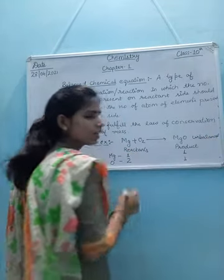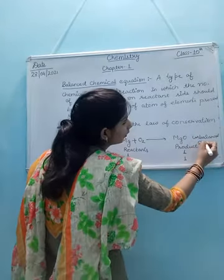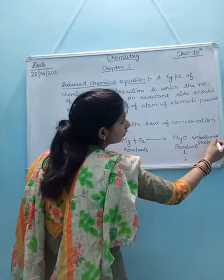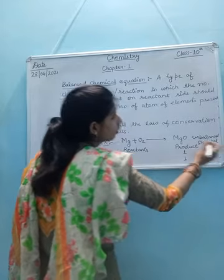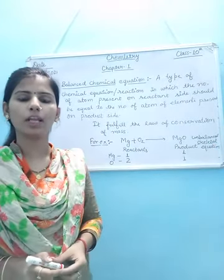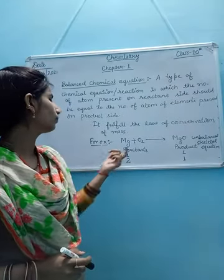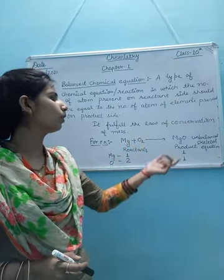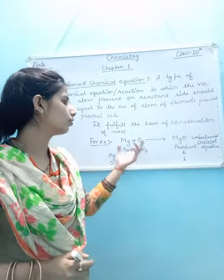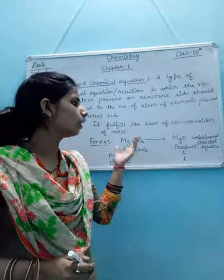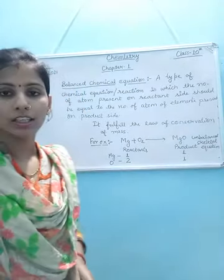This type of unbalanced reaction is known as a skeletal equation. A skeletal equation is a type of equation in which the number of atoms on the reactant side is not equal to the number of atoms on the product side. Any chemical equation that is unbalanced is known as a skeletal equation.